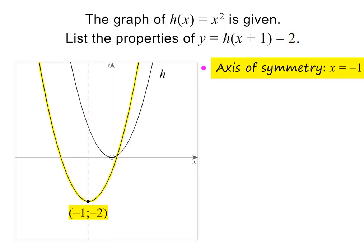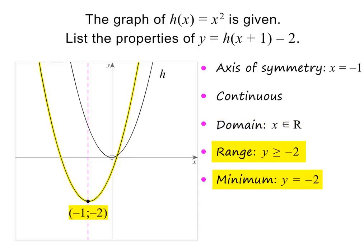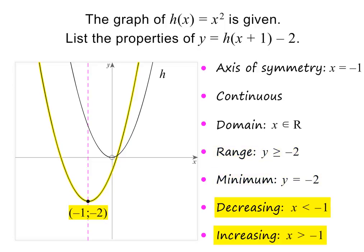The axis of symmetry is x equals minus 1, which is given by the x-coordinate of the turning point. The shifted parabola is continuous, because you can draw it without lifting your pencil. The domain is all real values of x, because the shifted parabola extends forever to the left and right without any breaks. The range is all real values of y greater than or equal to minus 2, because starting at minus 2 the shifted parabola extends up forever without any breaks. This also means that the minimum value is minus 2. The shifted parabola is decreasing to the left of the turning point and increasing to the right. These are the properties of h of x after it has been shifted two units down and one unit left.